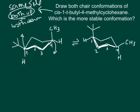Now we can ask which one is more stable. We know we want our larger groups to be in the equatorial position. But in this case, we can't have them both equatorial. In the first structure, we have our t-butyl group gets to be equatorial, but the methyl is axial. In the second structure, the tert-butyl is axial, and the methyl is equatorial.